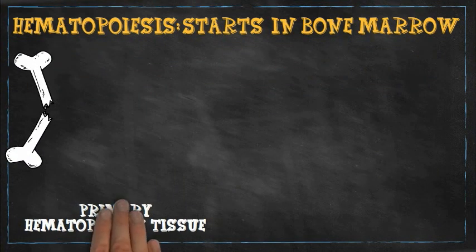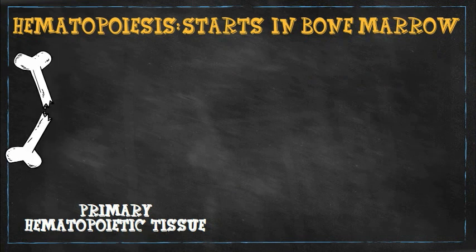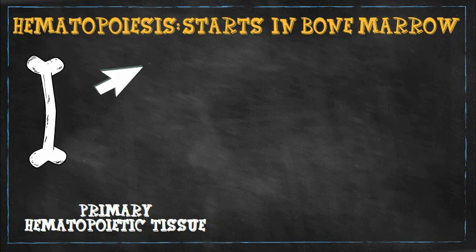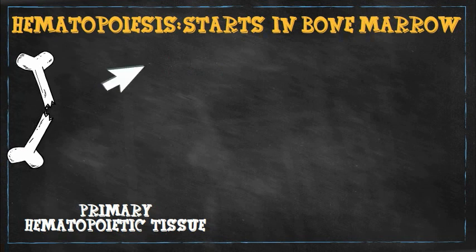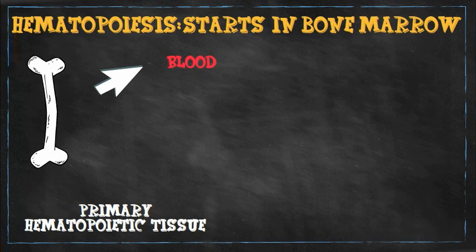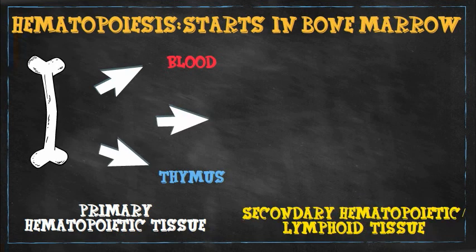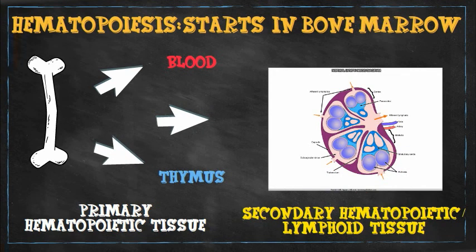All hematopoiesis happens in the bone marrow. Most of these hematopoietic elements end up in blood as blood cellular elements. Some come directly from the bone marrow; however, a subset of them — specifically lymphocytes — take a different path. Some initially end up in the thymus, and some go to secondary lymphoid tissues like the lymph node before ending up in the blood.